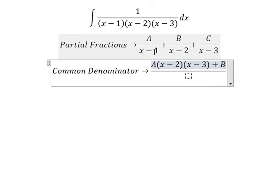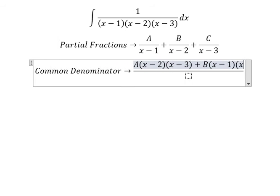For B, they're missing x minus one and x minus three. So we put x minus one times x minus three.